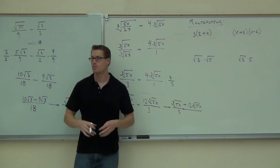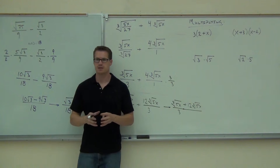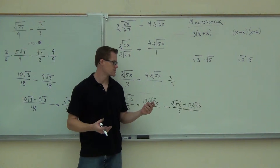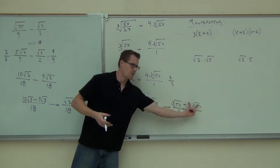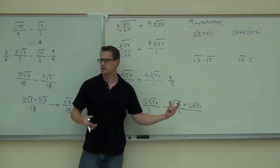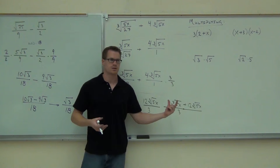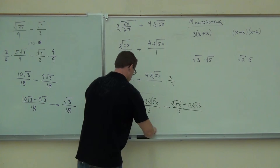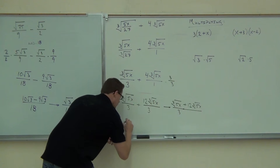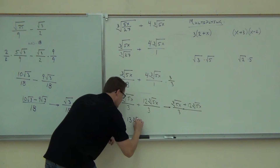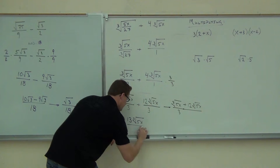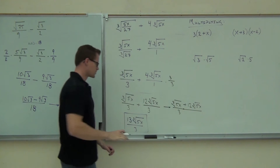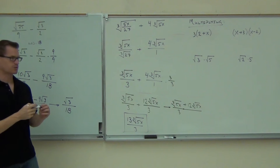Are they combinable? Yes — we've got exactly the same root, exactly the same radicand. We've got a cube root with radicand 5x. We've got 12 of them here and 1 here, so altogether we get 13 cube root of 5x over 3. That's as good as we can do — 13 cube root of 5x over 3.